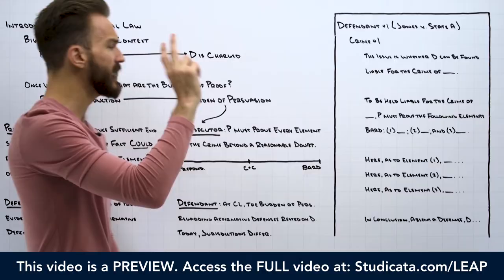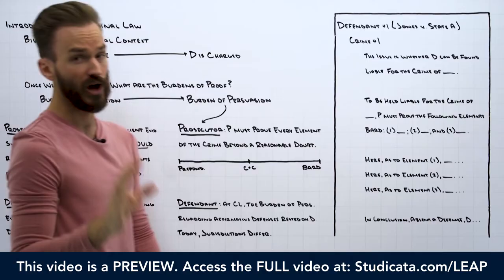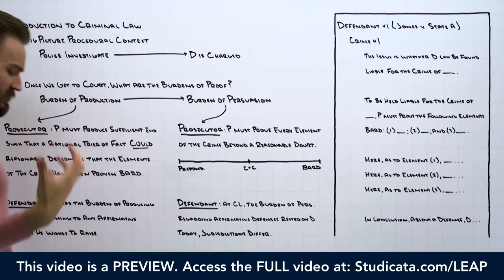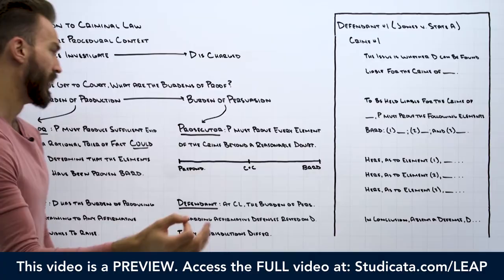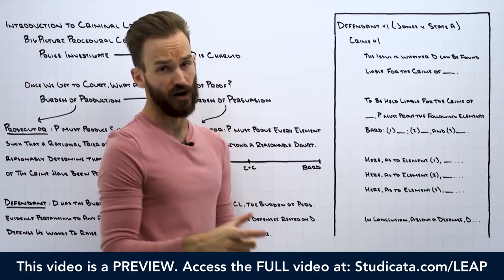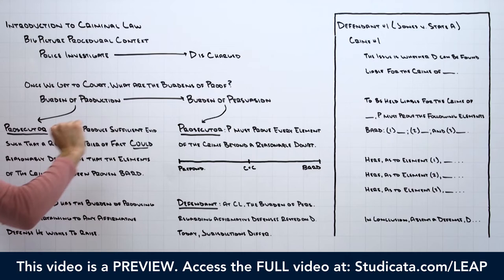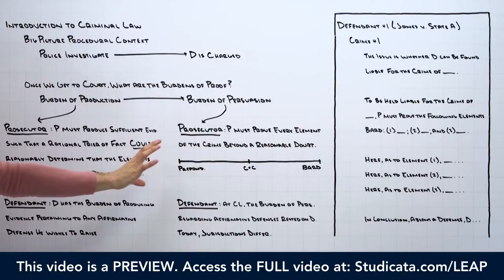To make this determination, we need to understand different burdens of proof. There are two main burdens we need to be aware of: the burden of production and the burden of persuasion. The burden of production is a question of law decided by the judge. The burden of persuasion is a question of fact decided by the trier of fact, which is usually the jury. The prosecutor must produce sufficient evidence such that a rational trier of fact could reasonably determine that the elements of the crime have been proven beyond a reasonable doubt.